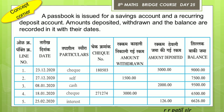If you have a passbook, you will be able to learn about it. Let us see: in the first column there are serial numbers, in the second column there are dates, then in the third column there are particulars, and in the next column there is a cheque number. As well as, in the next column there is amount withdrawn and also amount deposited, and in the last column there is a balance.